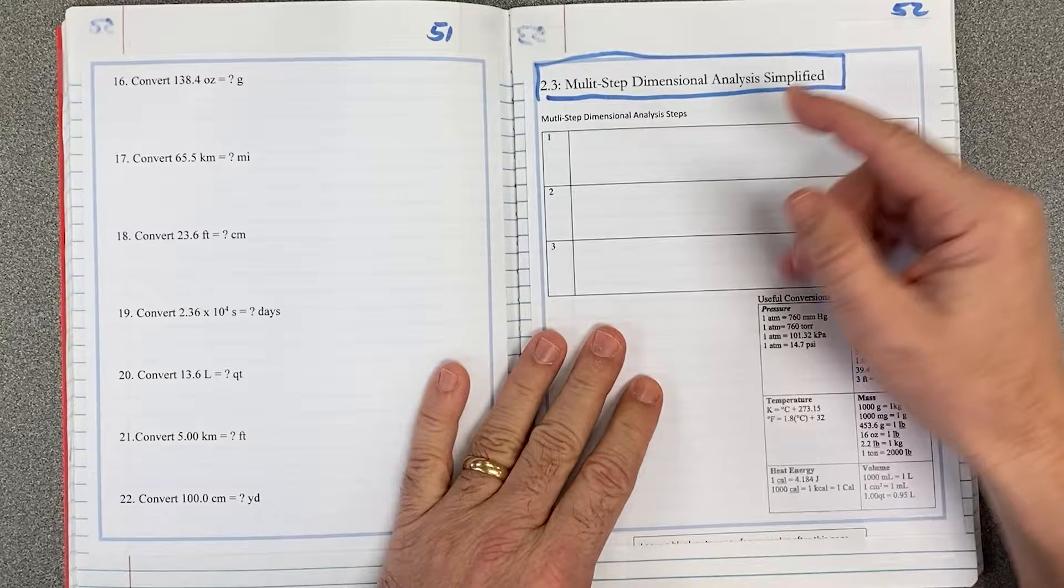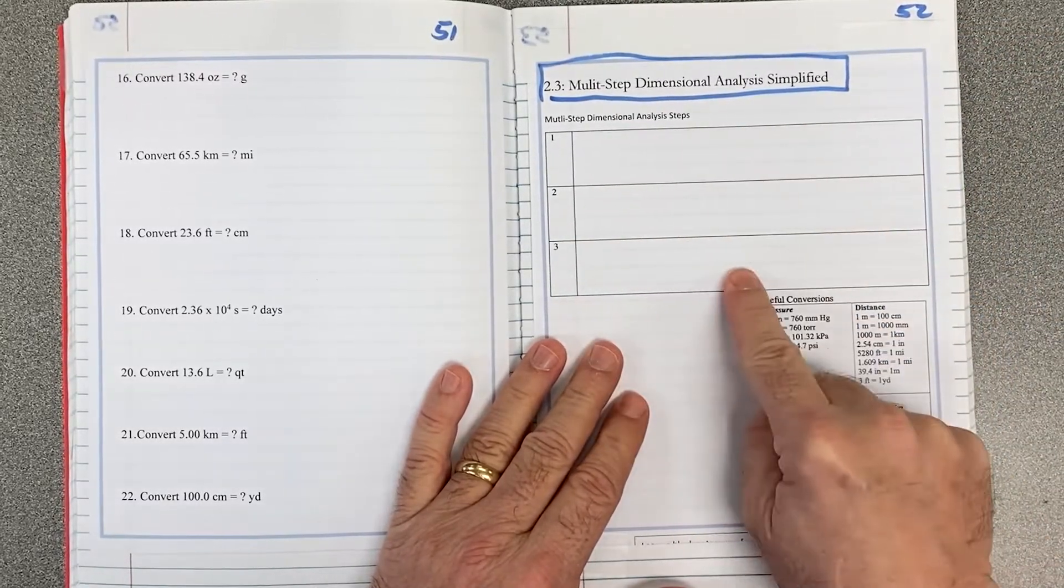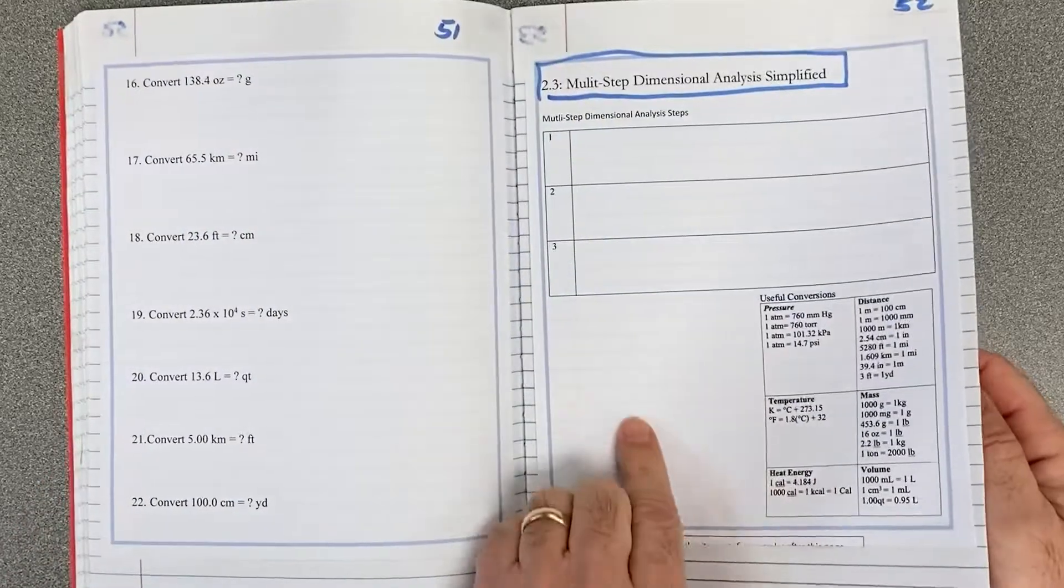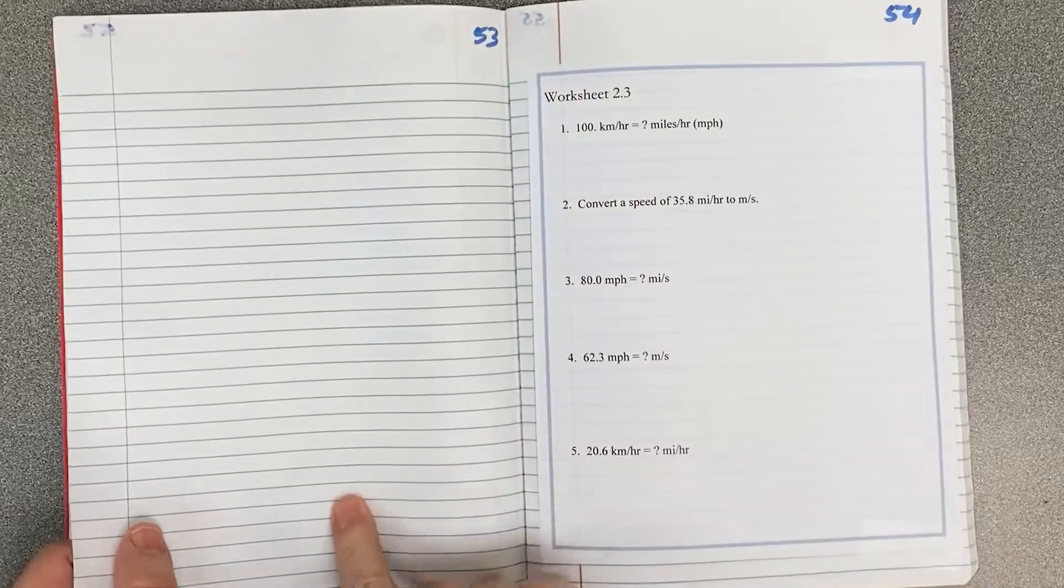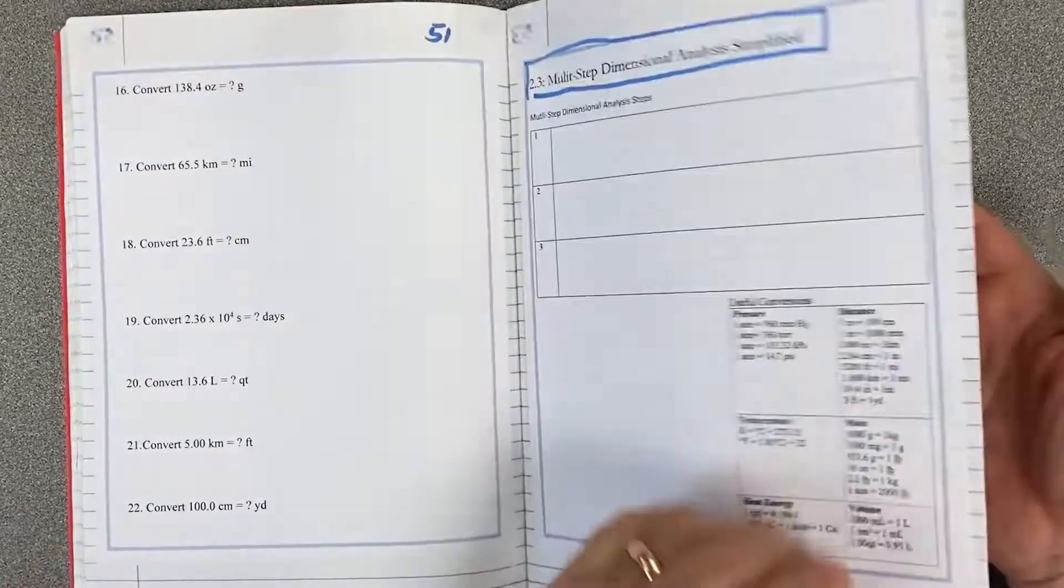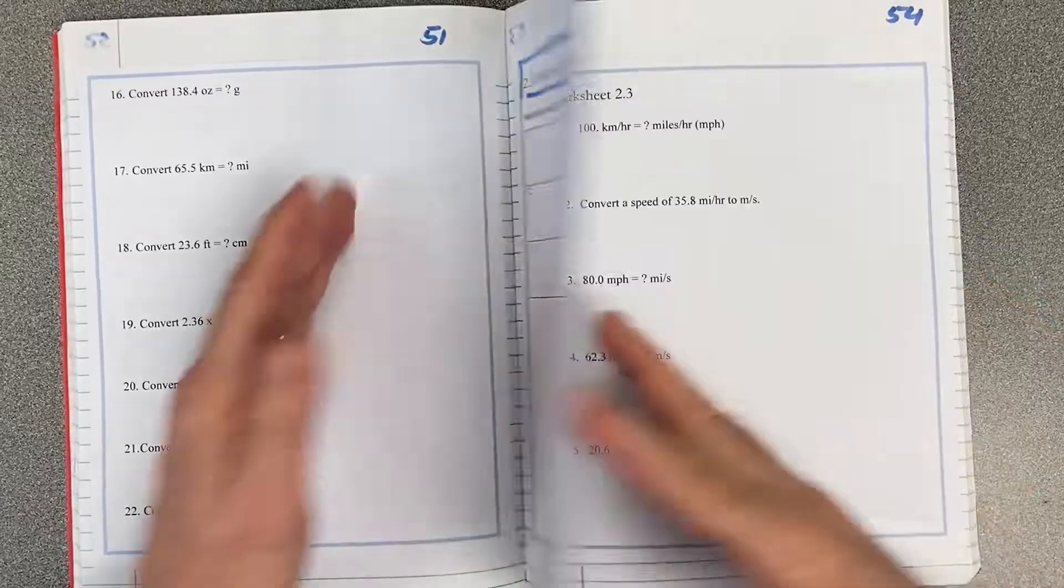Then we move to 2.3. Again, simple. I've also said what are the multi-step problems. There's some steps I'm going to put in the video. I want you to leave some space here to write some notes. You'll need this table. And then you'll have this space for additional notes. So two pages of notes for pages 52, 53, which is 2.3 notes. It's a video.